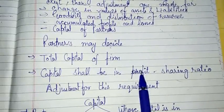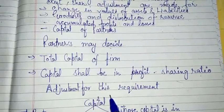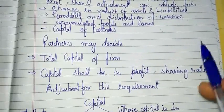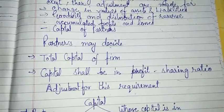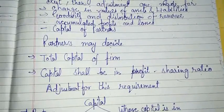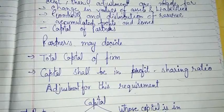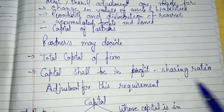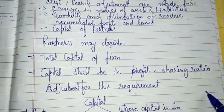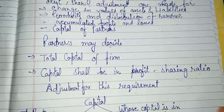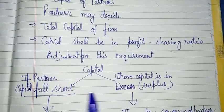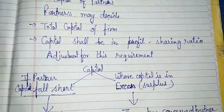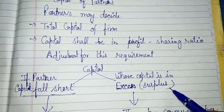जो भी adjustments करोगे आप capital account में, उन adjustments के through जो भी balances आएंगे, उन balances से हम total firm की capital calculate करेंगे। और उस total firm की capital से हम उस partner के new profit sharing ratio में उस balance को adjust करेंगे, जिसके through हमें balancing figure से पता चलेगा।